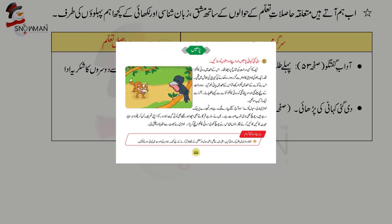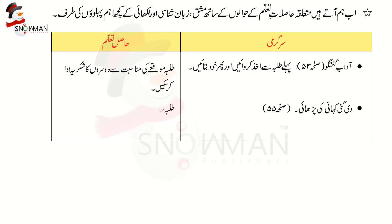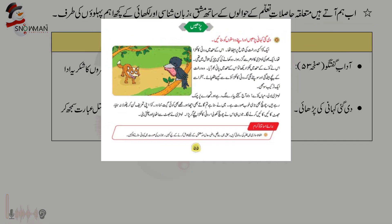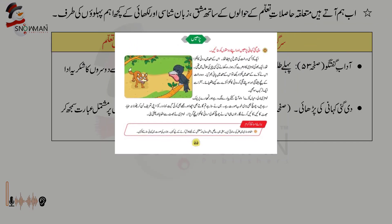دوسری سرگرمی ہے دی گئی کہانی کی پڑھائی، صفحہ نمبر 55 پر۔ حاصل تعلم یہ ہے کہ طلبہ سادہ اور مرکب جملوں پر مشتمل عبارت سمجھ کر پڑھ سکیں۔ یہ کہانی پہلے آپ بچوں سے پڑھوائیں، ان کے تلفظ، زیر و بم اور آواز کی اصلاح کریں اور پھر نمونے کے طور پر خود بھی پڑھ کر سنائیں۔ میں بھی یہ مختصر سی کہانی آپ کے لیے پڑھ کر سنا دیتا ہوں: ایک کوا کسی درخت کی شاخ پر بیٹھا تھا، اس کے منہ میں روٹی کا ٹکڑا تھا۔